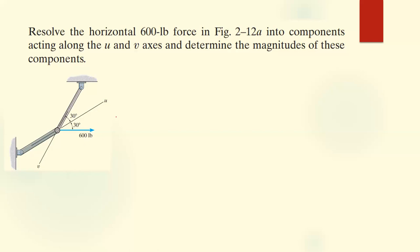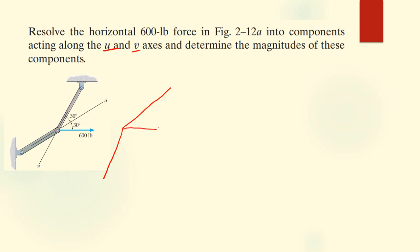Let me take this step by step. We have the u and v axis, and we've been taught to resolve the horizontal 600-pound force into the u and v components. So I have the u component drawn here, and then I also have the v component drawn parallel to this line.